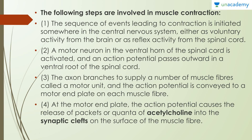The first step is the sequence of events which lead to contraction. They are initiated in the CNS — the central nervous system — either as voluntary activity from the brain or as reflex activity from the spinal cord. A motor neuron in the ventral horn of the spinal cord gets activated, an action potential passes outward in the ventral root, and the axon branches to supply a number of muscle fibers, which is known as a motor unit. The action potential is conveyed to a motor end plate on each muscle fiber, where it causes the release of packets or quanta of acetylcholine into the synaptic cleft.